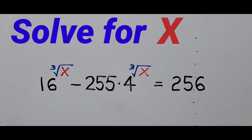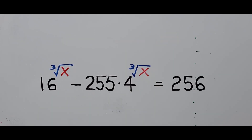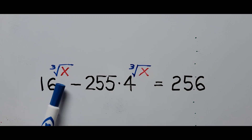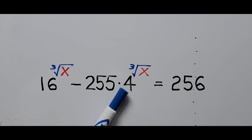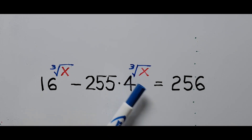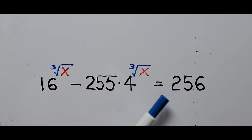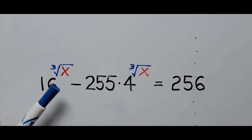Hello everyone! Welcome to Cassiano Easy Math. Today's video is about solving another exponential equation: 16 raised to the cube root of x, minus 255 times 4 raised to the cube root of x, equals 256. And we're going to find the value of x.